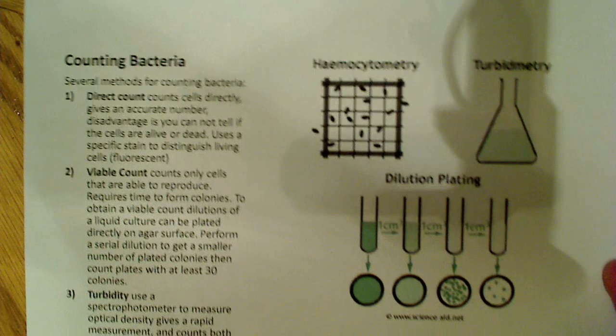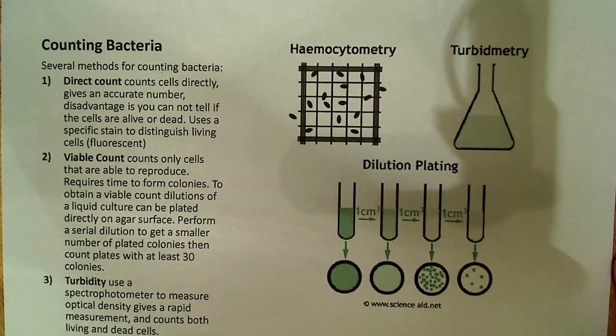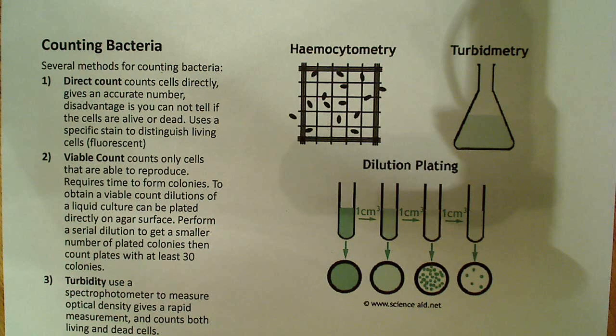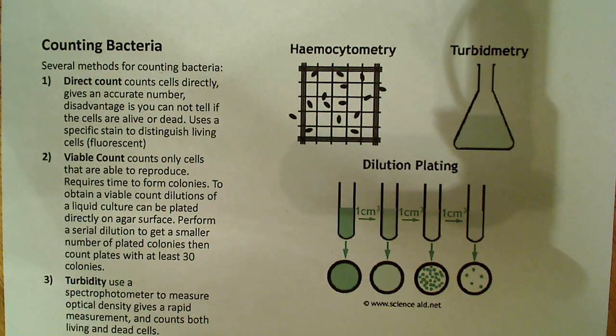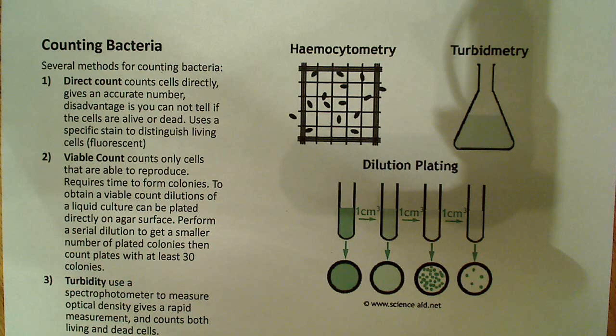The other thing I want to talk about in this video is counting bacteria. In the lab, it will often be necessary to have some way of counting the number of bacteria that you have. You can use several different methods. The first method is the direct count. That counts cells directly - it gives a very accurate number.